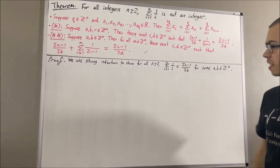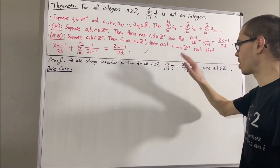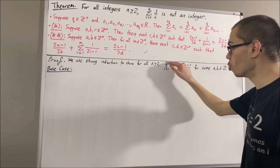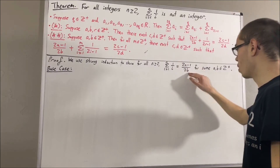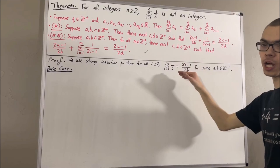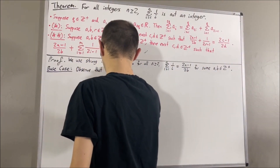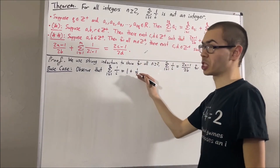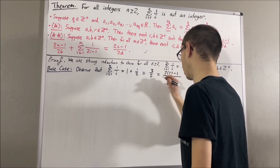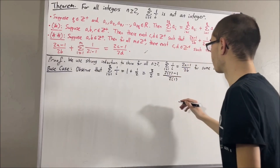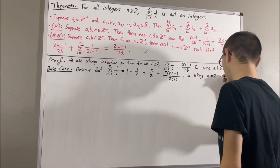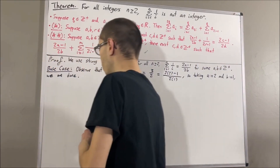So let's start with the base case, where n is equal to 2. We want to show that the sum from i equals 1 to 2 of 1/i has the form (2a − 1)/2^b for some positive integers a and b. The sum from i equals 1 to 2 of 1/i is just 1 plus 1/2, which equals 3/2. We can write 3 as 2·2 − 1 and 2 as 2·1. So, taking a to be 2 and b to be 1, we're done. This completes the base case.